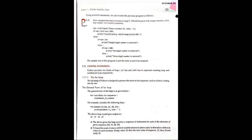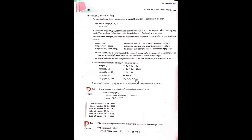Looping statements: there are two loops — for loop and while loop. In the for loop, the syntax is: 'for variable in sequence: statement'. For example, 'for element in [10, 20, 30]: print(element + 2)' — it prints 12, 22, 32. In the for loop with range, the first value is inclusive and the second value is exclusive — for range(5, 12), it works from 5 to 11 (12 is excluded). The third parameter is the step value.